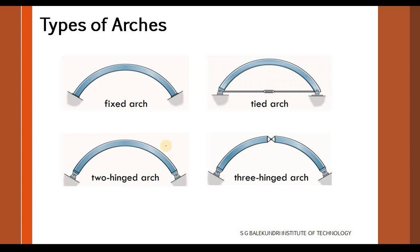What are the types of arches? We have a fixed arch, where both ends are fixed. We have a tied arch where the supports are connected by a tie rod and are pinned. We have a two-hinged arch where the supports are pinned or hinged. And we have a three-hinged arch where the supports are pinned and there is an additional hinge at the crown. Because of this crown hinge, this arch becomes a determinate arch. Our study of arches in this subject will be strictly for three-hinged arches only.